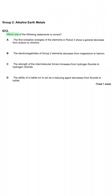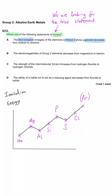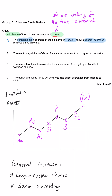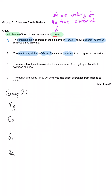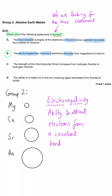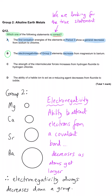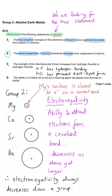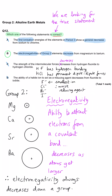Which one of the following statements is correct? A: the first ionisation energies of elements in Period 3 show a general decrease from sodium to chlorine — that's not true, it's a general increase across any period. B: the electronegativities of Group 2 decrease from magnesium to barium — this is the correct answer. Electronegativity decreases down any group because the atom gets larger, its nucleus's pull is shielded by more energy levels, giving a weaker attraction for covalently bonded electrons. C and D are both false.